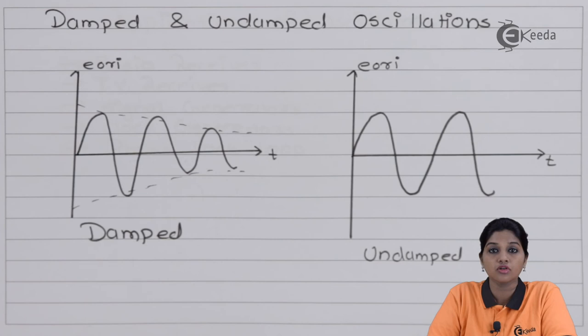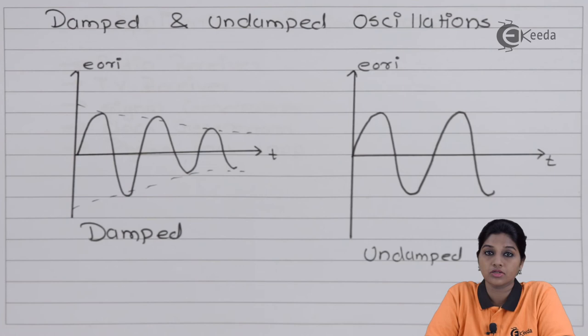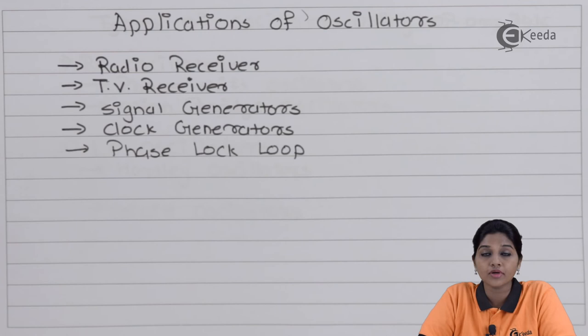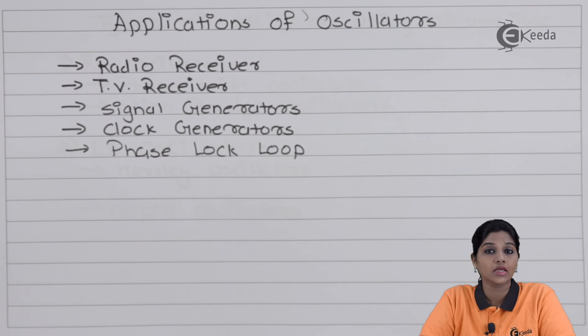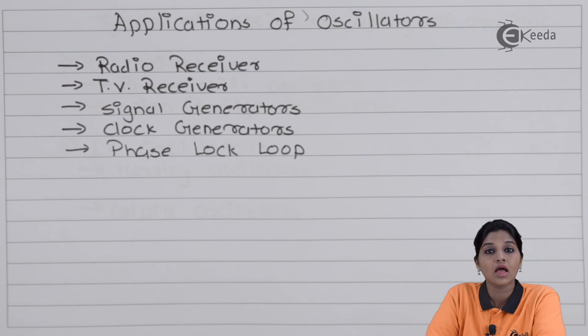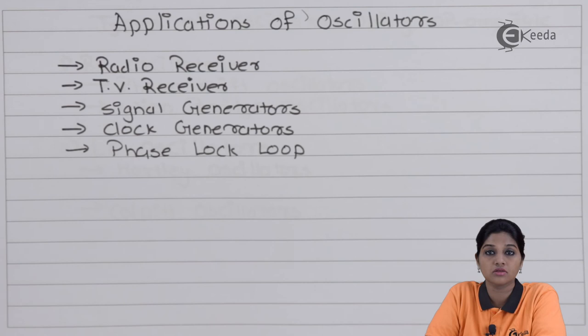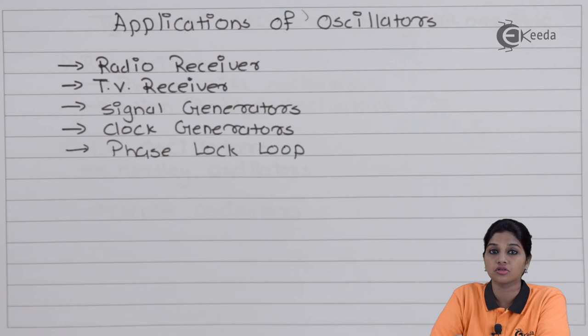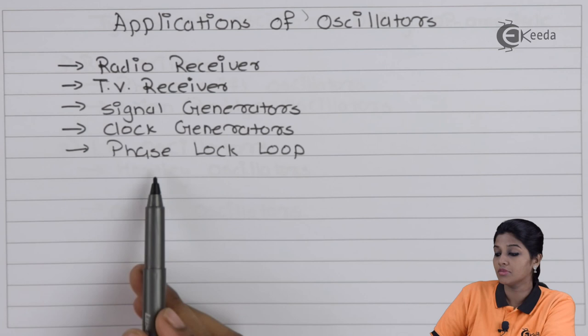Now let's look at the various applications where oscillator circuits can be used. Since oscillators provide sustained or undamped oscillations with variable magnitude and variable frequency, they have many applications in electronics. They can be used in radio receivers for obtaining signals at different frequencies, in TV receivers, and in signal generators. Since oscillator circuits operate on DC power supply and convert it into AC signals, they are used as signal generators in laboratory applications. They can also be used as clock generators in logic circuits, or in phase-locked loops.